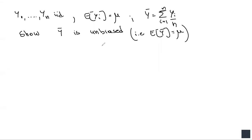We're going to show that if we have a random sample — which means the sample is independent and identically distributed — then y-bar, which is our sample mean, is an unbiased estimator for the mean of y. The way to proceed is simple: take the expected value of y-bar and operate on it until we get that the expected value of y-bar is equal to mu, which is the mean of y.